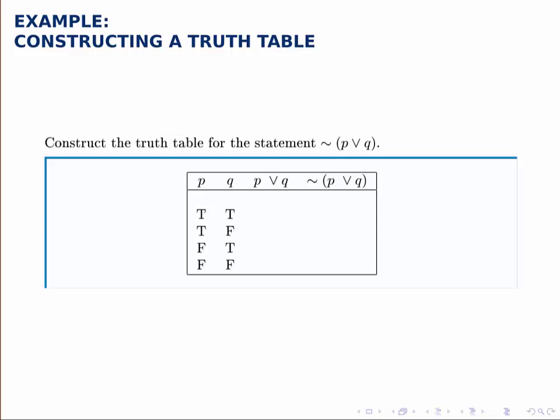When we get to doing compound statements with three statements, P, Q and R, we'll need eight rows in our table to account for all eight possibilities, but we'll get to those later.